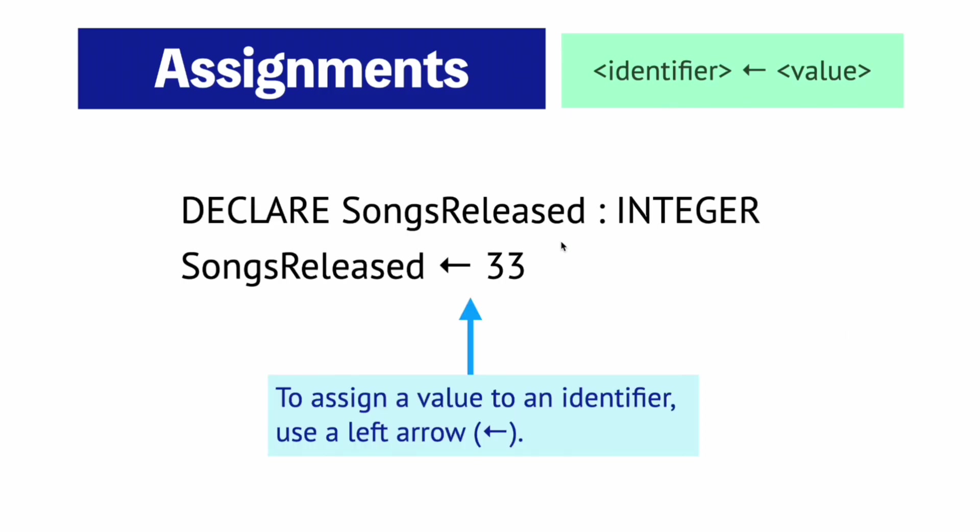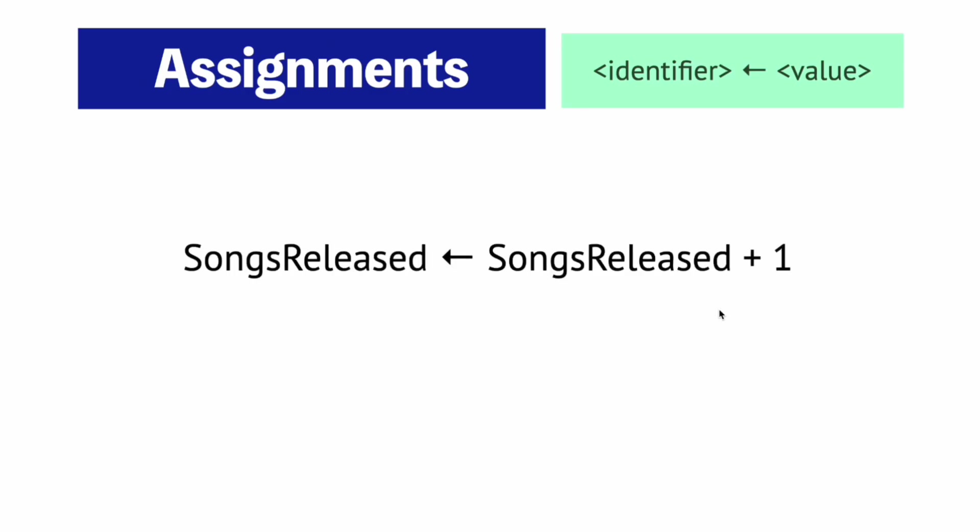To assign a value to a variable you need to use a left arrow to show that a value belongs to an identifier. For example if you have a variable called songs released and you want to store the integer 33 you will have to write it like this with this left arrow. You can update the value of this variable later on in the program. Here the value inside of songs released is incremented by one and then stored instead of songs released again. You can also store and update variables using values from other variables as long as the data types align.